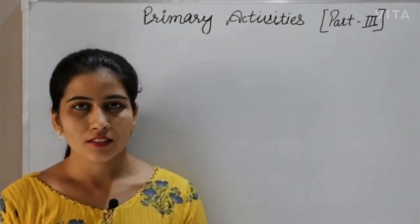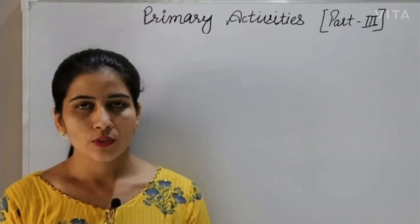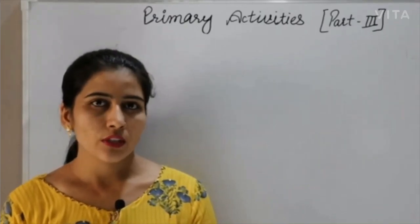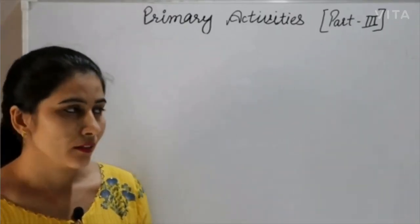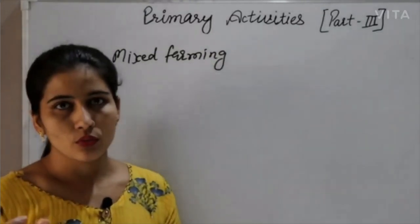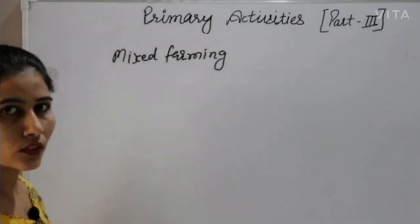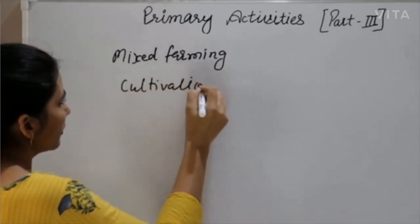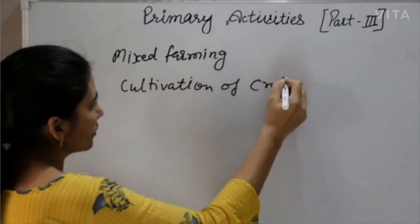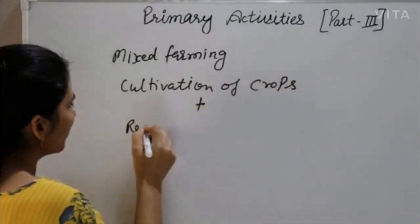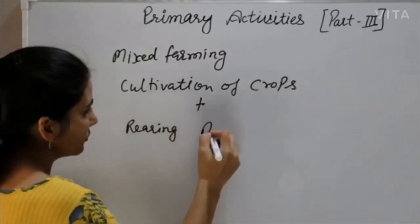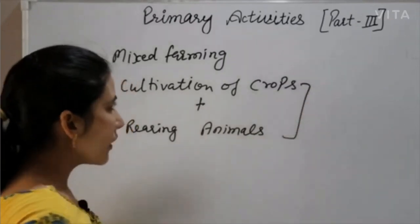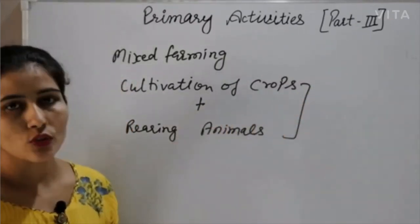Hello friends, welcome back to Rajni Classes. In our last video we discussed commercial agriculture, plantation agriculture, and dairy farming. Today we will learn about mixed farming. In this type of agriculture, two works are done at the same time: cultivation of crops and rearing animals.